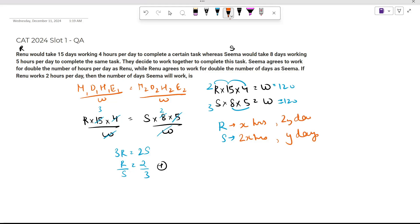If Renu works 2 hours per day, the value of x is 2. So Sima would work 2x, that is 2 into 2, which is 4 hours per day. We can now calculate this. Using this formula will help us reach the answer.